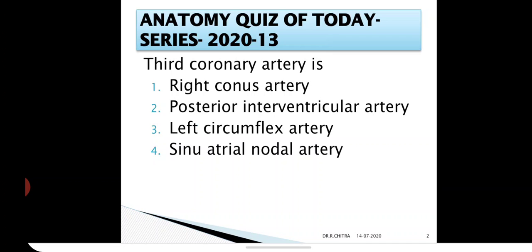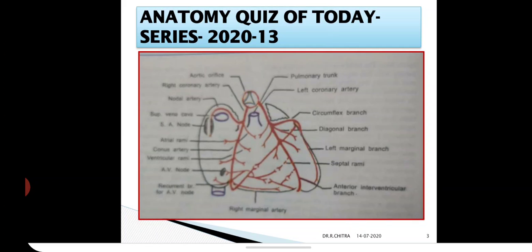The right option is option number one, right conus artery. In this picture you can see the right conus artery. It is usually the first branch of the right coronary artery.